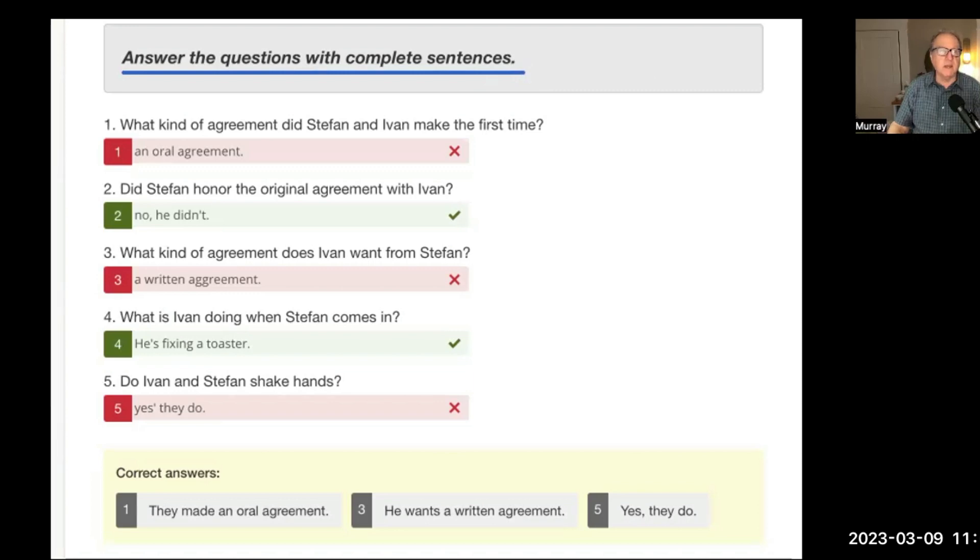And again, complete sentences usually means a subject and what they call a predicate. And a predicate is a verb and other stuff. And as we know in English, every sentence, every complete sentence needs a subject. So, what kind of agreement did Stephan and Yvonne make the first time? And this is asked in the past tense. The answer is what kind, and your answer is right. It's just that the information is correct, that we're just trying to teach you to write complete sentences, get more practice in complete sentences, because that's the essence, the root of writing in English.